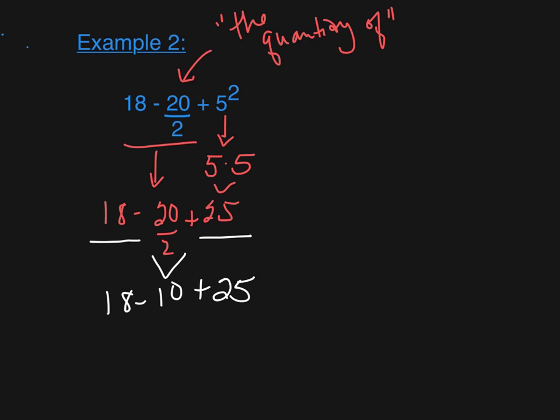Now I only have addition and subtraction. I'm going to go in order from left to right. So 18 minus 10 is 8, plus 25. And now I've only got 8 plus 25, which is 33. Again, started from the big, went down to the smallest, to get my answer.